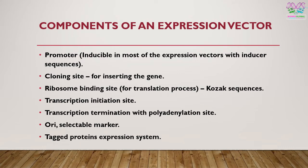The most important components of an expression vector include a promoter that can be either constitutive or inducible. Most expression vectors have an inducible element, which can be induced by the supply of external compounds and elements. There is also a cloning site used for inserting the gene, a ribosome binding site for translational purposes, and if the vector is a eukaryotic vector, COSAC sequences are required, which are involved in protein synthesis in eukaryotic cells.